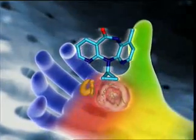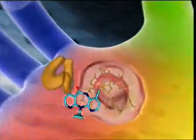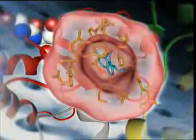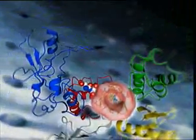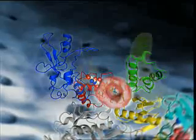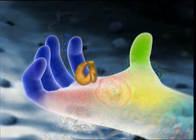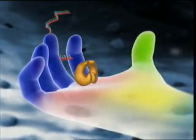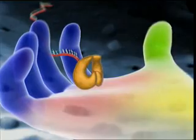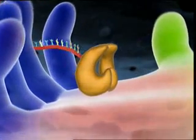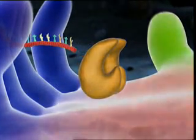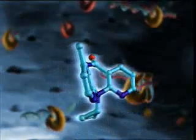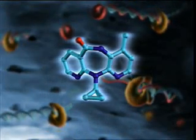Nevirapine is an important representative of this class. It does not need to be metabolized. In its native form, Nevirapine binds in the pocket. This locks the thumb in the open position and prevents the transcription of RNA. Thus, Nevirapine stops viral replication, making it a potent partner in the combination therapy of HIV-1 infection.